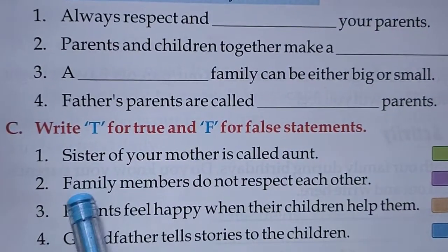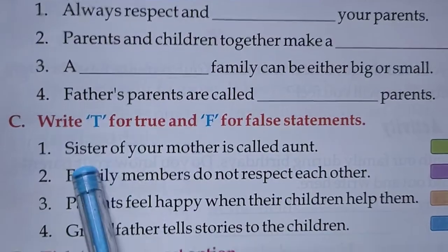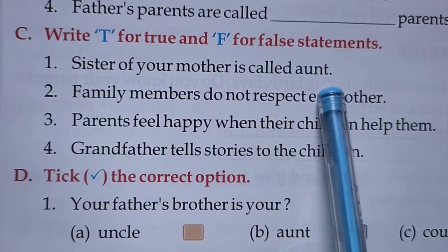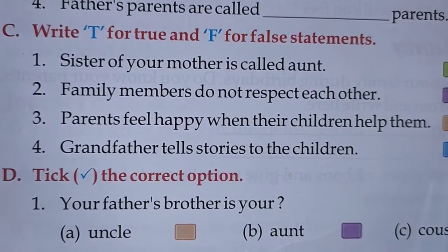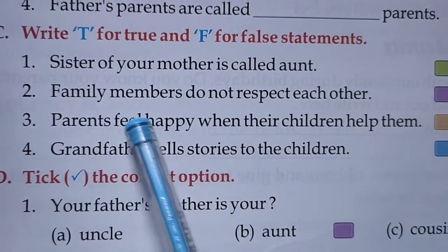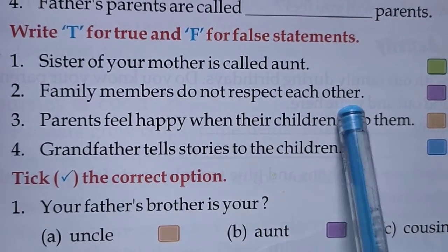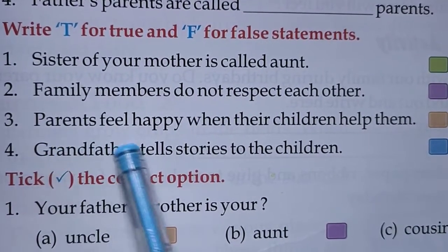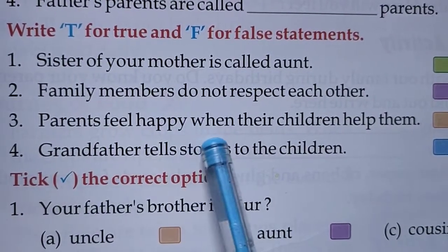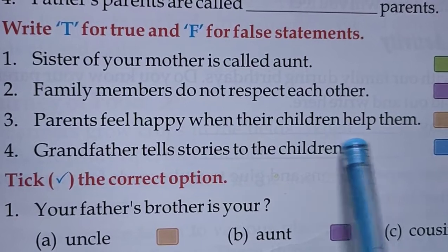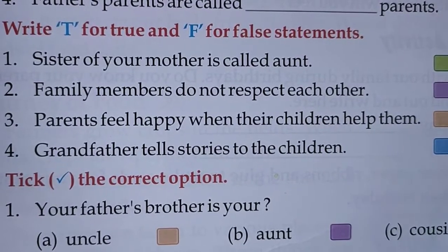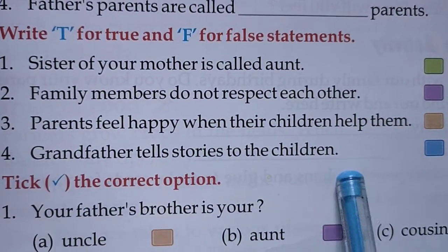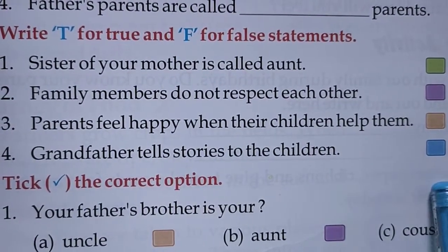True or false. Sister of your mother is called aunt — True. Family members do not respect each other — False. Parents feel happy when their children help them — True. Grandfather tells stories to the children — True.